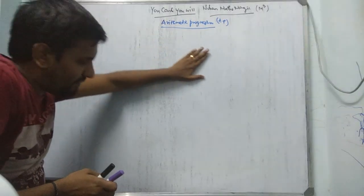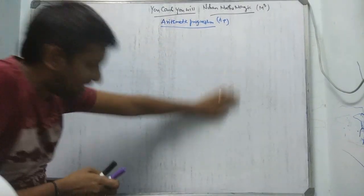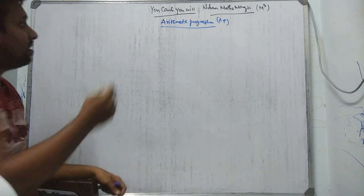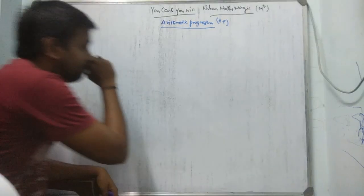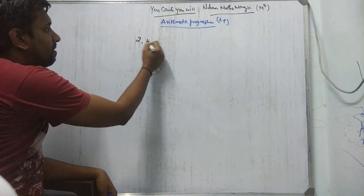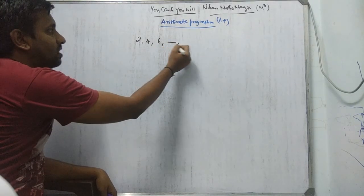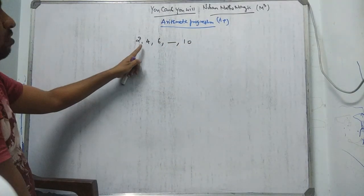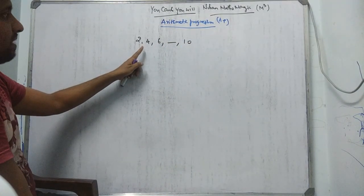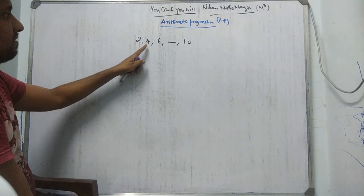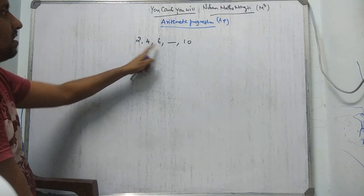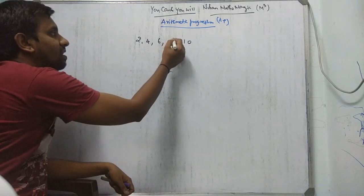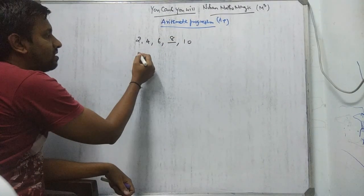There are only 3 to 4 formulas, but it's real-life oriented. For example, I'll start with this example: 2, 4, 6, dash, 10. What may be the next term? First of all, you'll check the difference. The difference between these two terms is 2. So the next term will be 8. The difference is same.